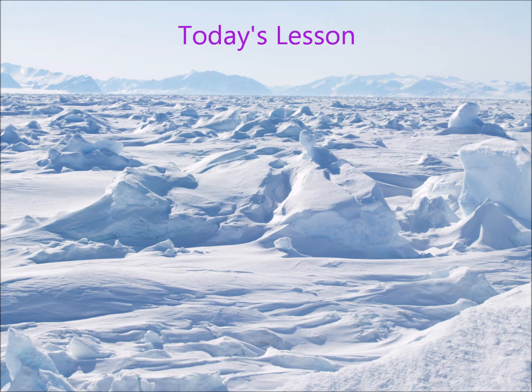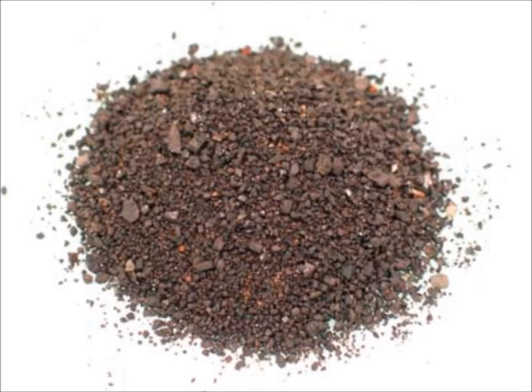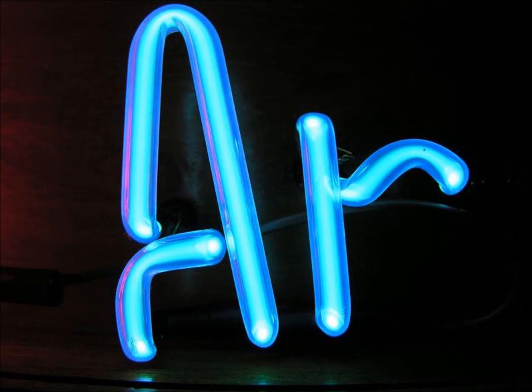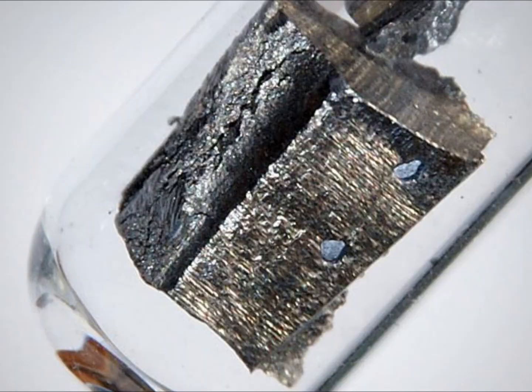Today, we'll be looking at what happens to certain elements when they are exposed to sub-zero temperatures. In other words, we're going to find out what happens when things get really cold. Specifically, we'll be talking about three different elements: tin, argon, and neodymium.